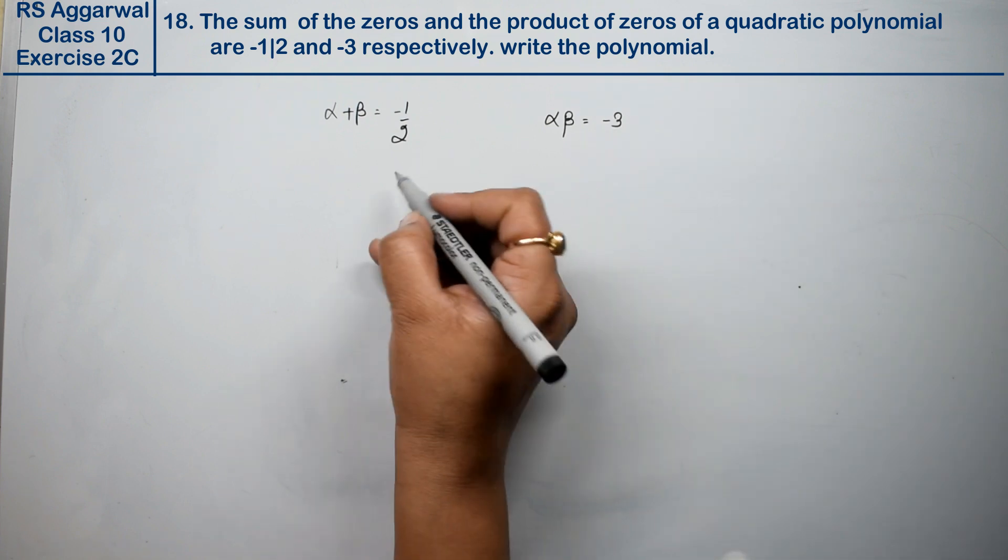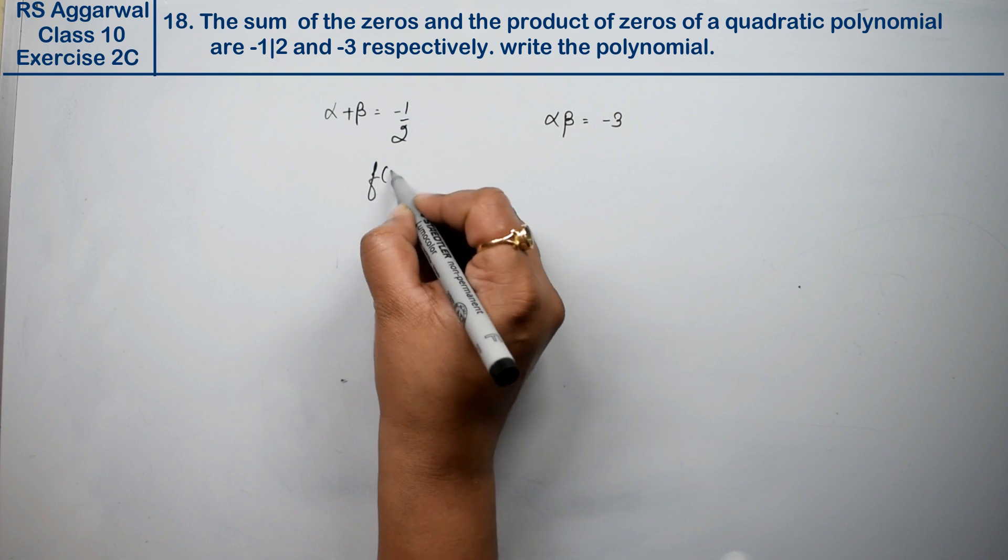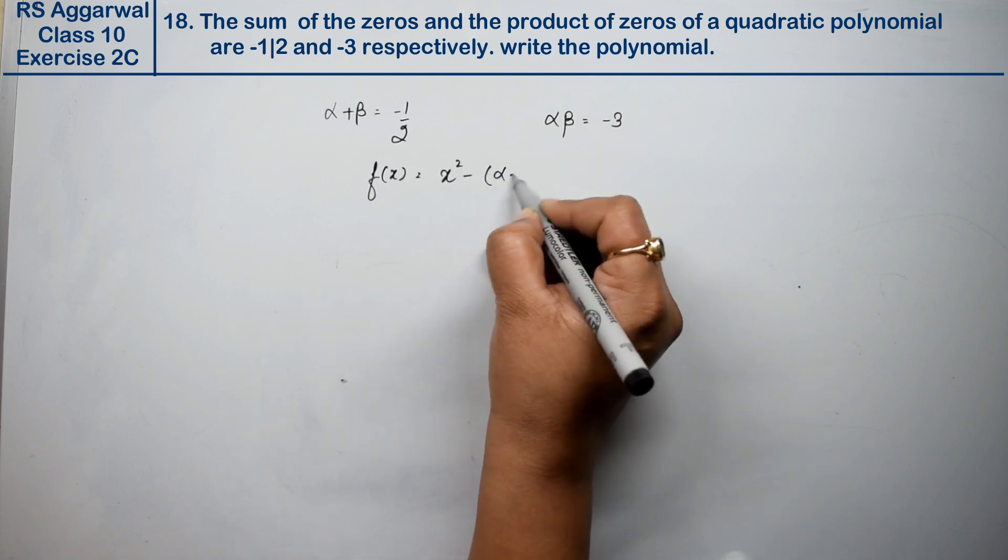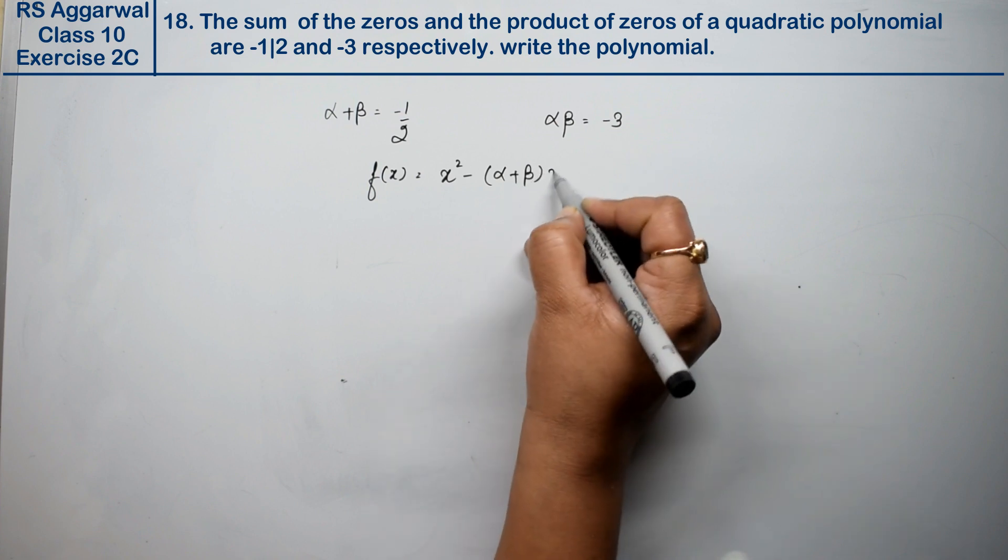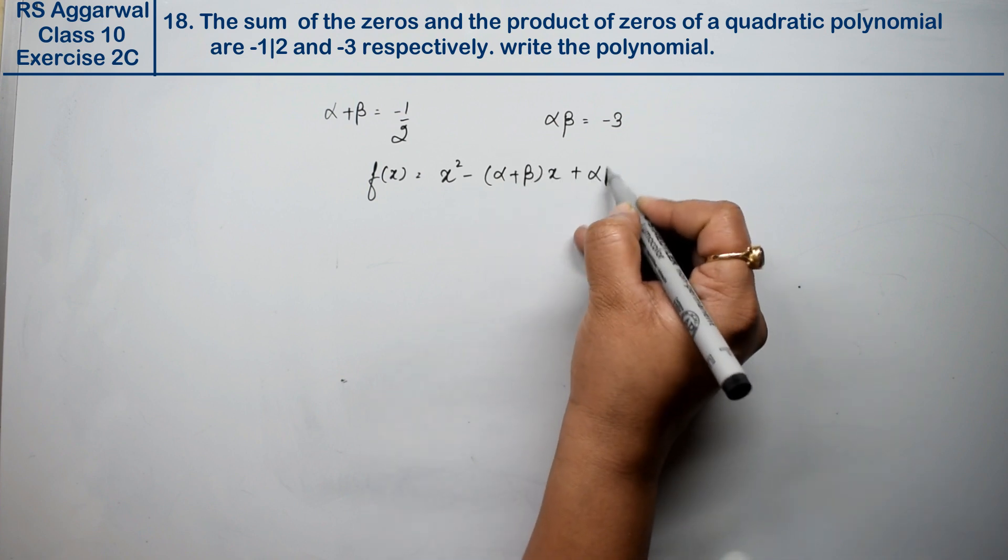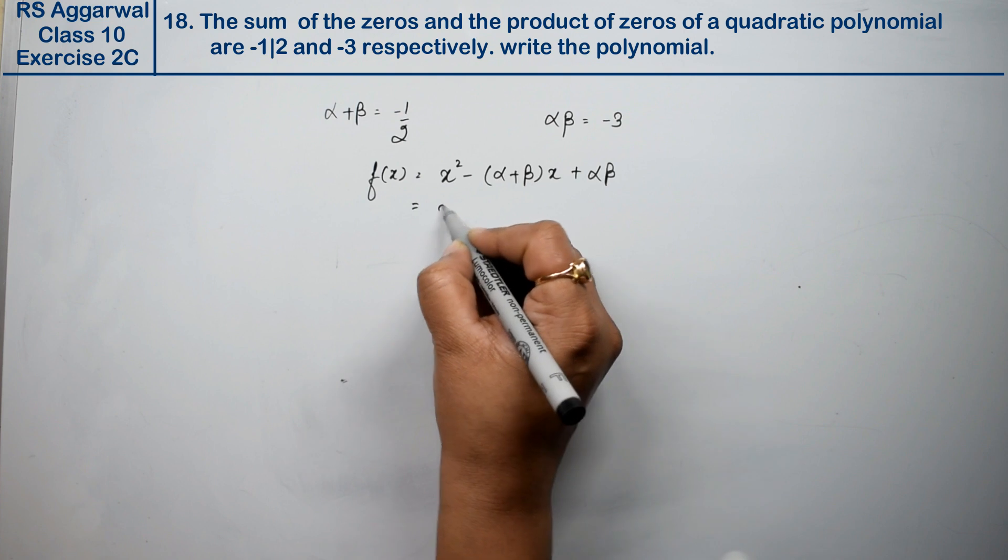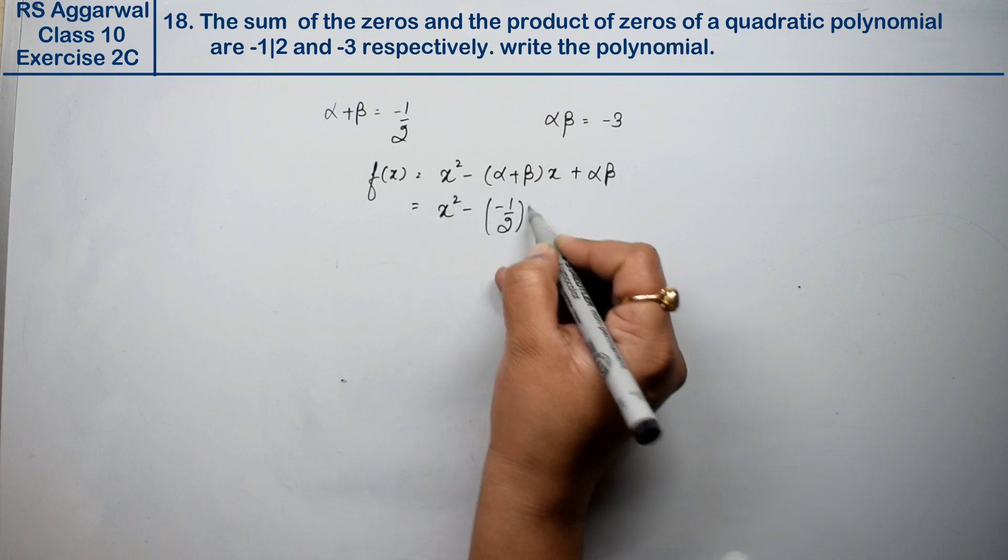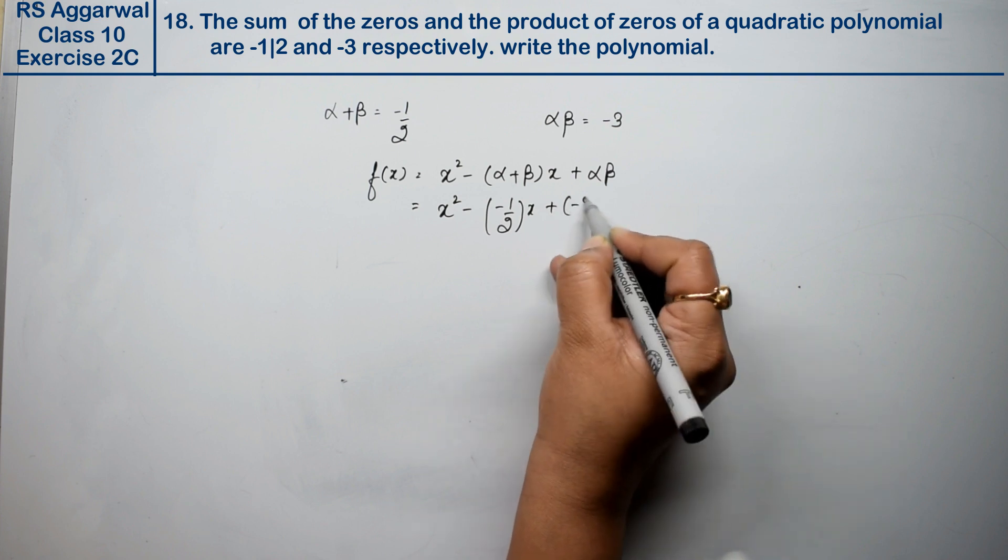So what is the polynomial? The polynomial is x square minus alpha plus beta times x plus alpha beta. This is the value: x square minus minus 1 upon 2x plus minus 3.